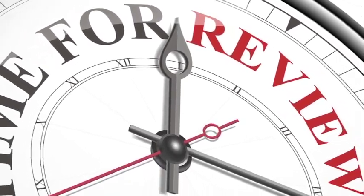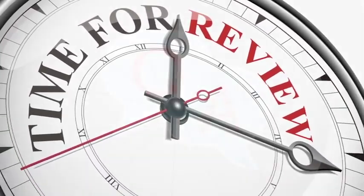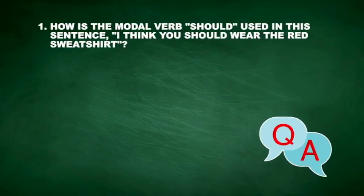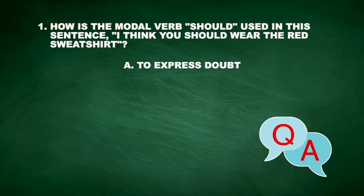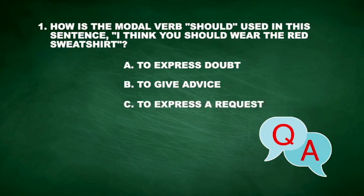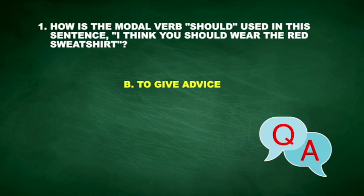Are you ready for the modal auxiliary verb challenge? Question 1: How is the modal verb 'should' used in this sentence? 'I think you should wear the red sweatshirt.' A, to express doubt. B, to give advice. C, to express a request. D, to express certainty. If you answered B, you know that in this case, 'should' was used to give advice.